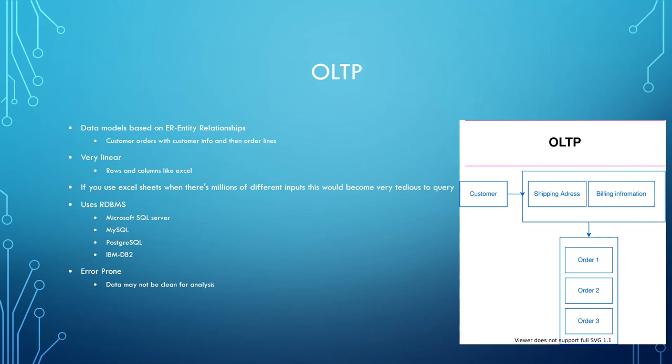The problem with OLTP for our Tim Cook question is that it's very tedious to query all this data and get what we would like across all the different regions, different years, and different quarters. What this system is mainly used for is customer orders and online transactions.